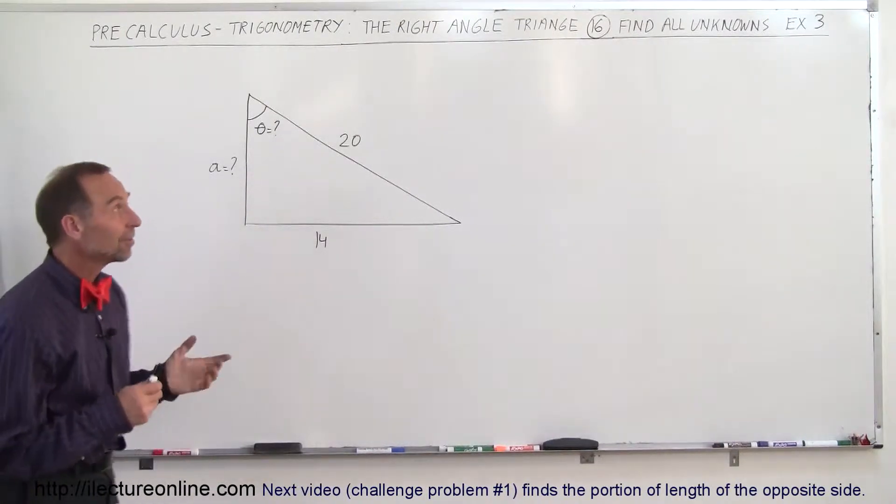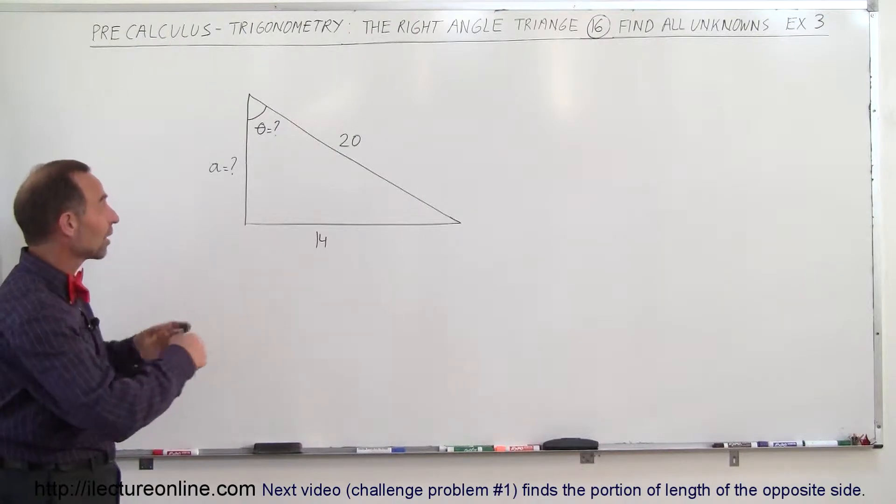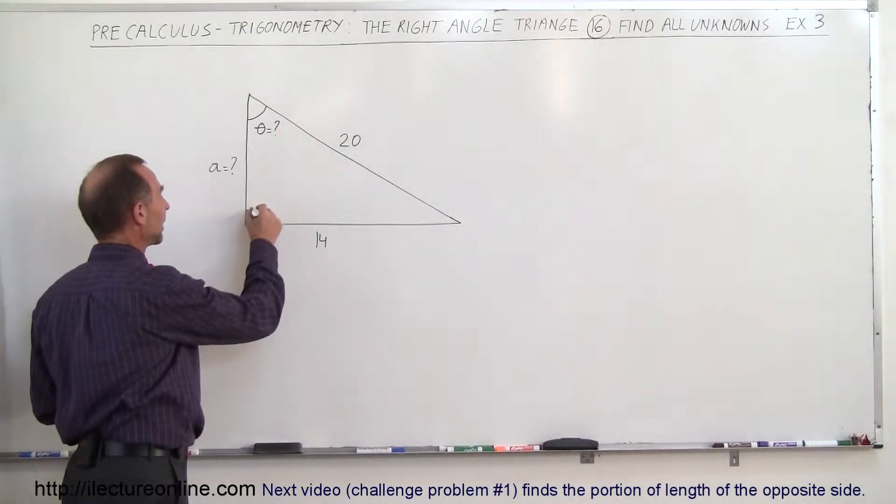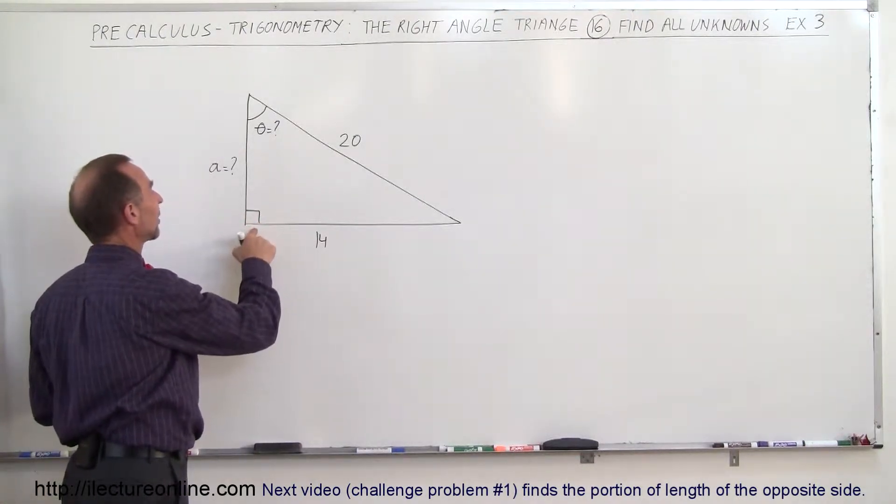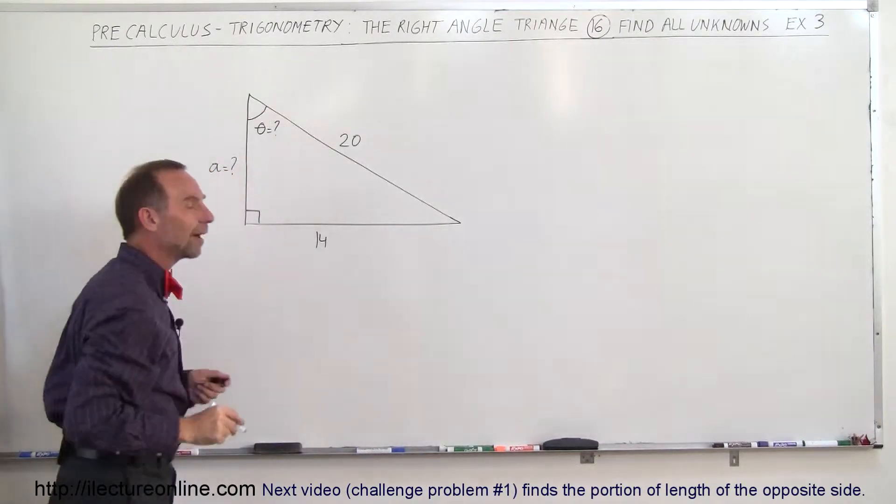Welcome to our lecture online. In our last example of this type where we mix things together, notice that the triangle is drawn kind of strangely—it's a right angle triangle. This corner is 90 degrees. We're trying to find this angle and that side.